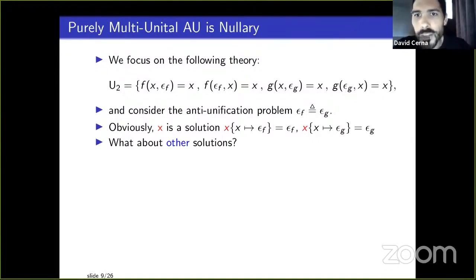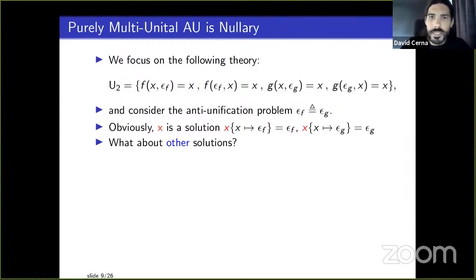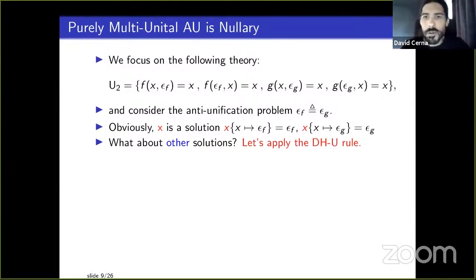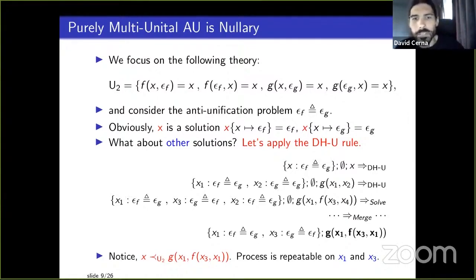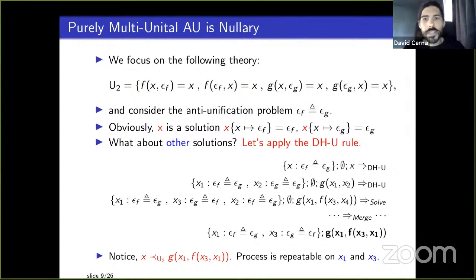Note: we don't use 0 and 1 because that would imply addition and multiplication semantics, adding complications. This is an elementary theory with just ε_f and ε_g. Applying the DHU rule and solving, we get a new generalizer: g(x1, f(x3,x1)) — one of many obtainable depending on how we apply DHU. This generalization is less general than x over the equational theory, and notably, the process can be repeated on x1 and x3, giving an infinite sequence.